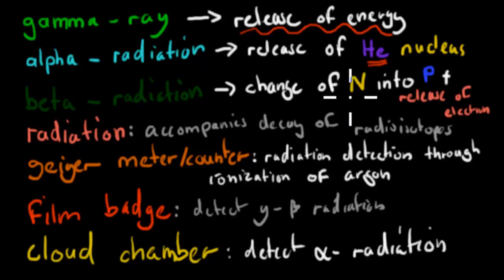Beta radiation, that's when we change one neutron into a proton. And also, we also release an electron in the process as well. Radiation, that just accompanies decay of radioisotopes, because radioisotopes are radioactive, which means over time they're going to be decaying into something which is a normal isotope again. Radiation happens as a byproduct of that decay.